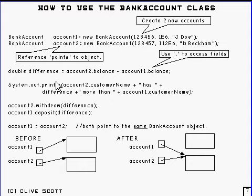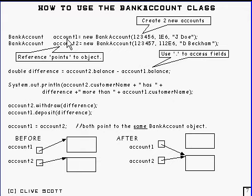Here's the dot notation to access fields within a particular object. It's account1 dot balance — that will get the balance out of there. The dot notation is also used with method names.